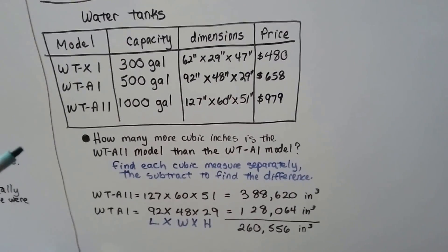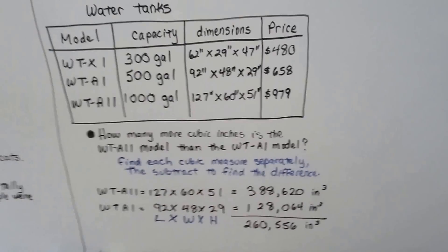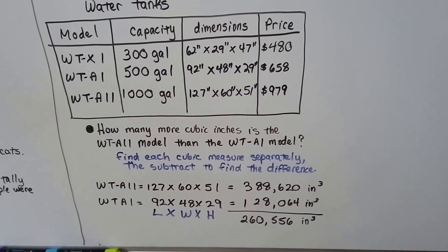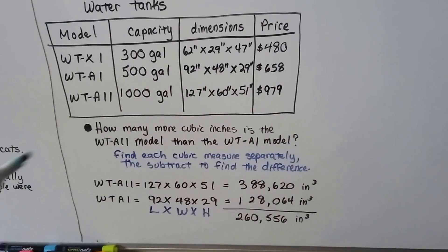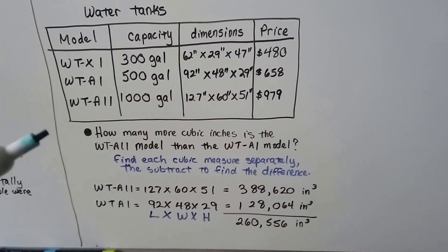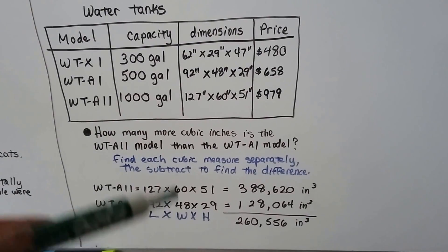Not just take it off and answer, like, what is the price of the WTX1? Well, 480. That's easy. And then you would write the answer, 480. That's great for reading the table.